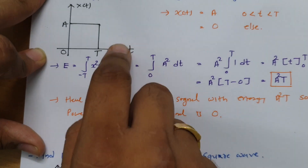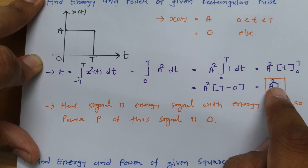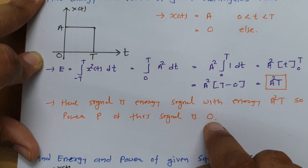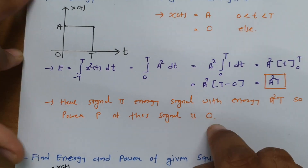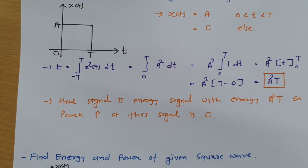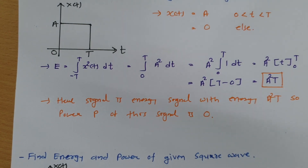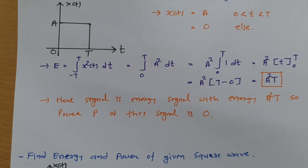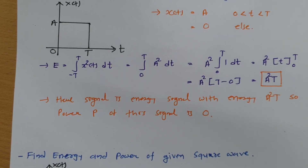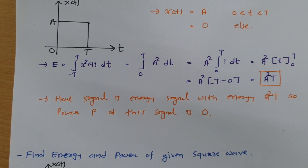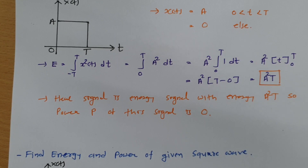This is an energy signal — the rectangular pulse — because its energy is A²T and power is 0. This is how we calculate energy and power of a rectangular pulse as well as a square wave. I hope you have understood this session.